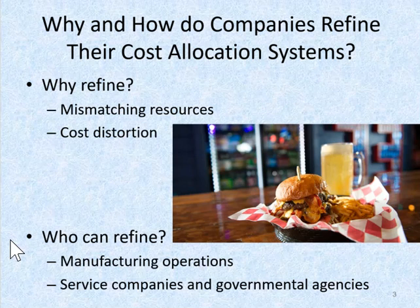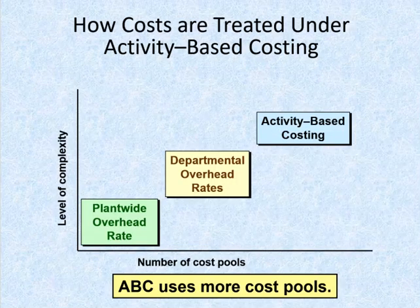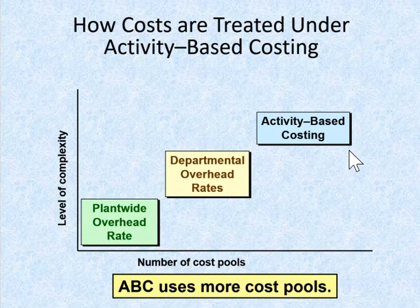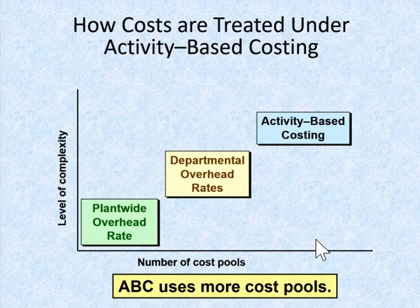Even merchandising and service companies as well as governmental agencies can use refined cost allocation systems to provide their managers with better cost information. Activity-based costing uses more cost pools than traditional costing systems, which often use a single plant-wide rate or just one overhead pool per department. ABC cost pools are created to correspond to the activities performed in an organization that cause the consumption of overhead resources, so the total number of ABC cost pools will definitely exceed one.